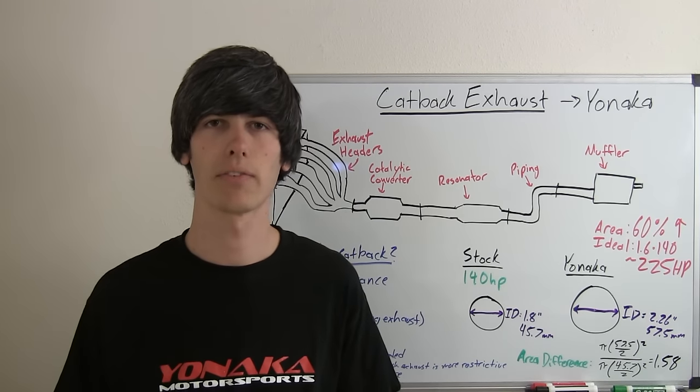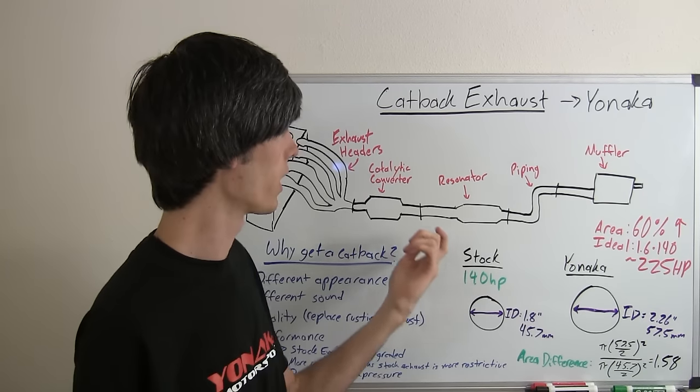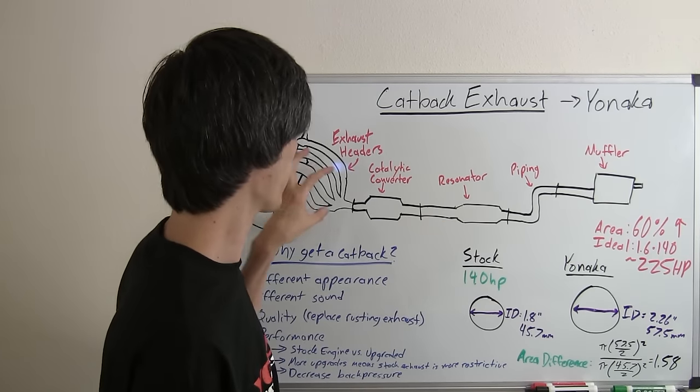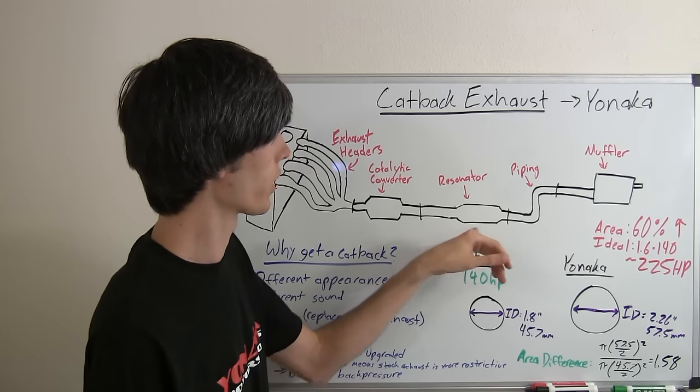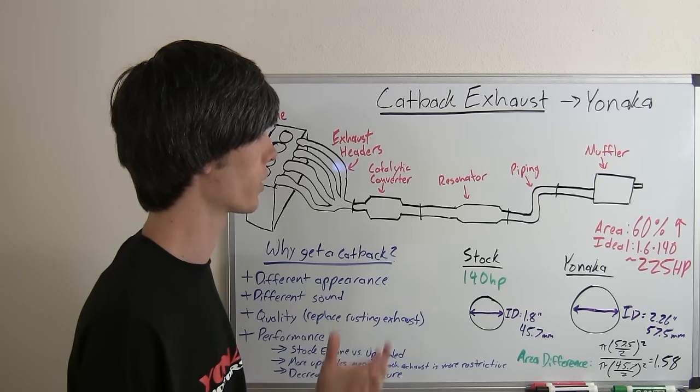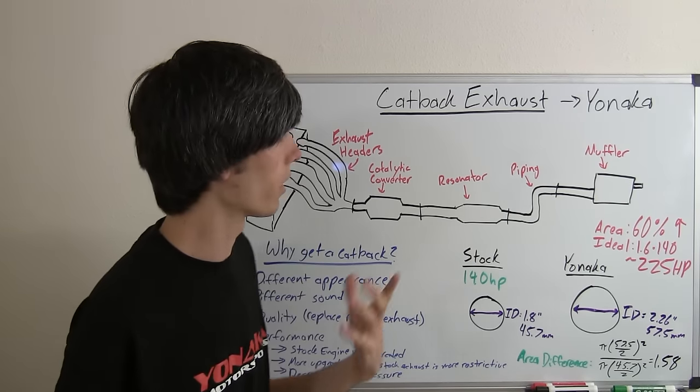But if you have added modifications to your exhaust, your cat-back may become a burden if the piping is too small and it has free flow up until that point. So if your cat-back is causing too much back pressure, by changing it out for a larger diameter pipe, you can get better performance.